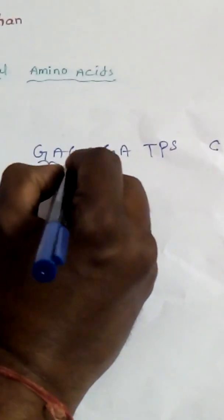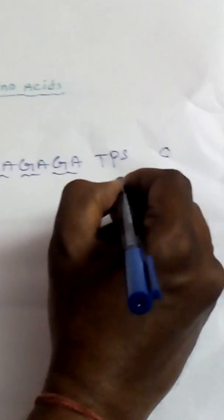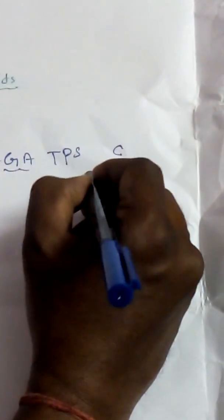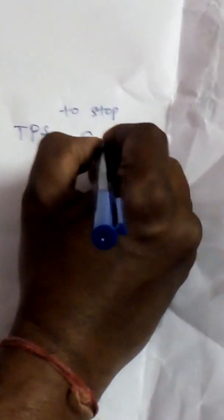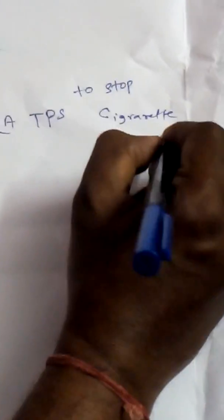So we can make the sentence: Gaga gaga tips to stop cigarette smoking. Like that we can make the code to remember the non-essential amino acids — gaga gaga tips to stop cigarette smoking.